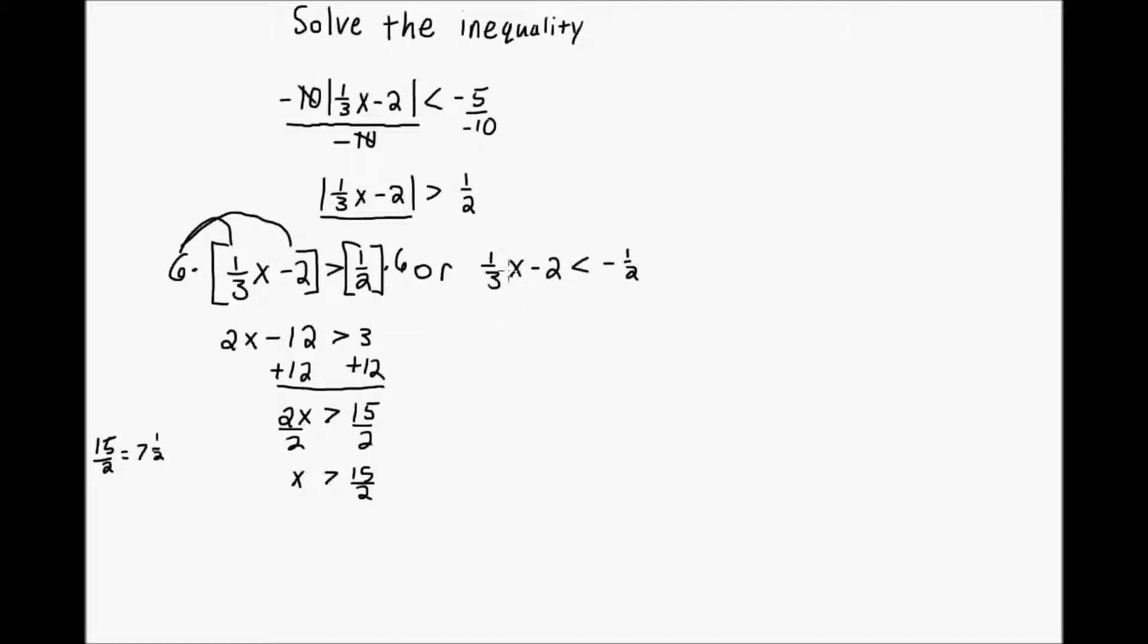Alright, let's go ahead and eliminate the fraction over here. Again, it's the same denominators, 3 and 2, so I'm again going to multiply through by 6. Distribute the 6. 6 times 1 third is going to be, again, 2x. And 6 times 2 is still going to be 12.